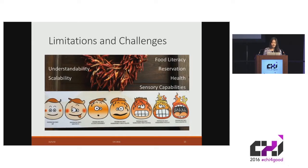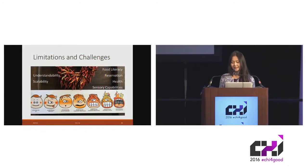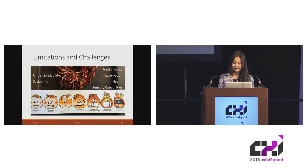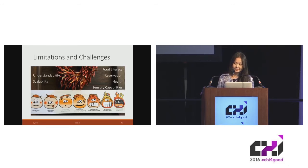For example, the understandability of edibilization can be affected by food literacy and sensory capabilities of users. Since food can perish over time, people may also have health concerns and dietary constraints. Some edibilization might not scale or endure well. Therefore, data edibilization might only be applicable and beneficial in certain scenarios.